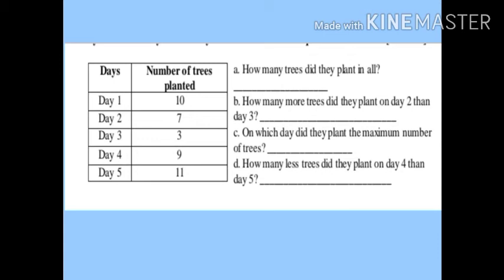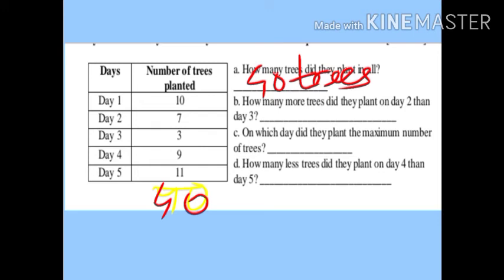First question: how many trees did they plant in all? We must add all the planted trees. 10 plus 7 is 17, plus 3 is 20, plus 9 is 29, plus 11 is 40. Total trees planted is 40.